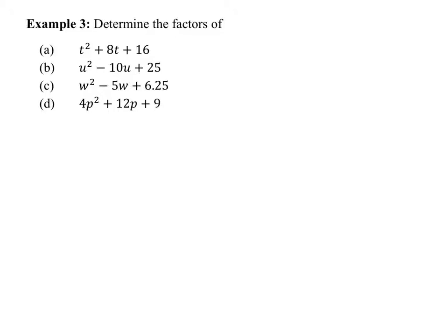Look at part A — look at the first and third terms. What do you notice about them? They are perfect squares. This is a perfect square; this is a perfect square. So start right away by thinking about what their square roots are. What's the square root of t squared? t. What's the square root of 16? 4. Now what's t times 4, doubled? 2 times t times 4 gives you 8t.